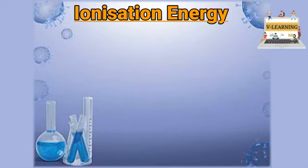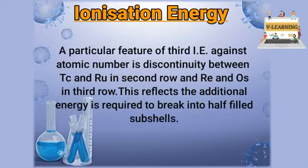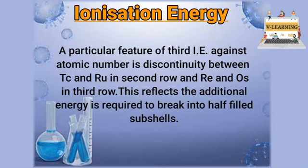If we talk about the third ionization enthalpy, there is a discontinuity in the trend between technetium and ruthenium, which are in the second transition series, and between osmium and rhenium, which are third transition elements. These show different values because of the presence of a stable half-filled D-subshell.